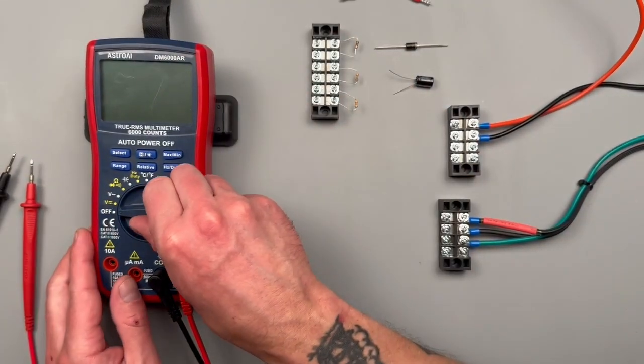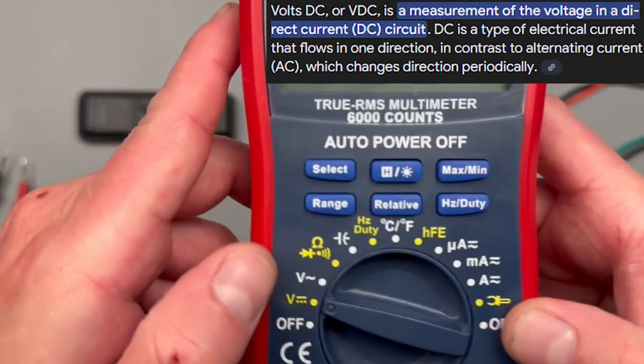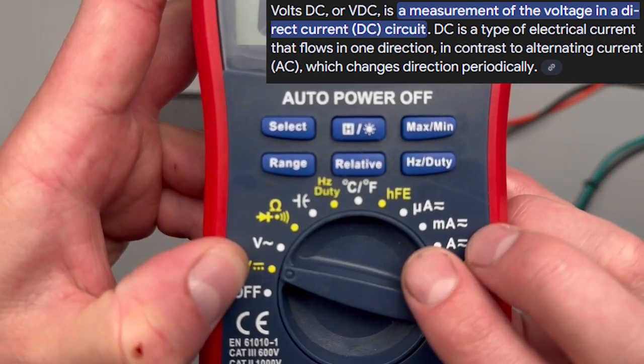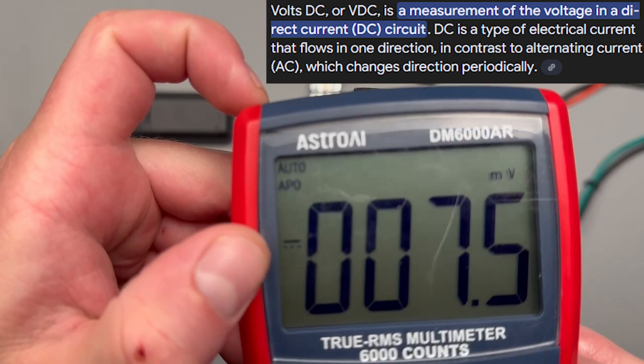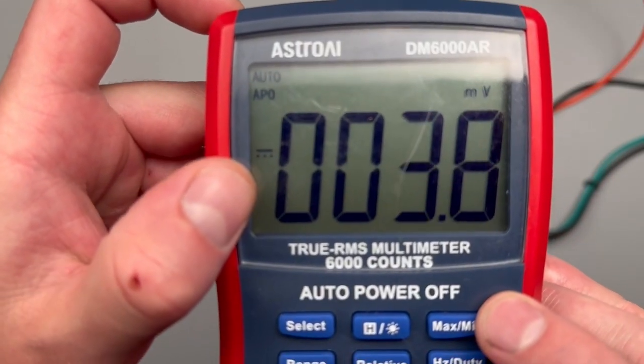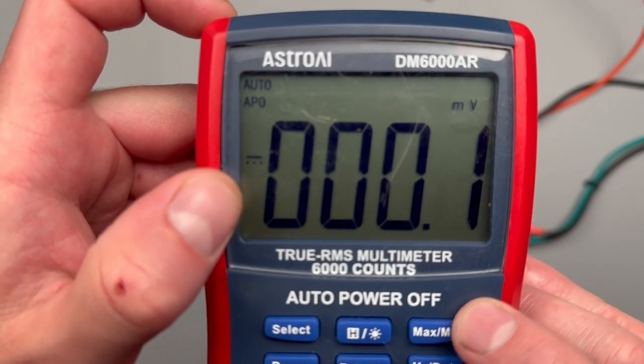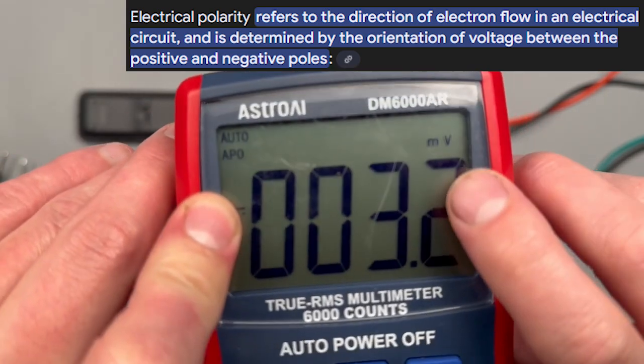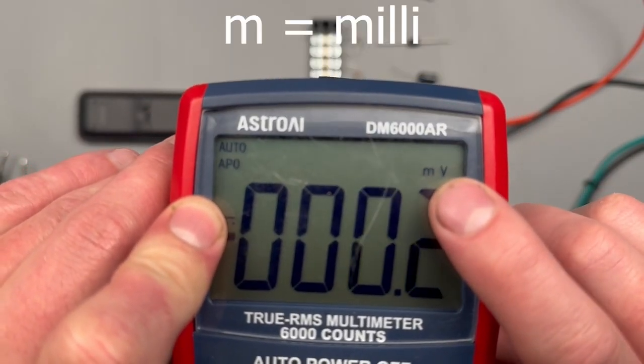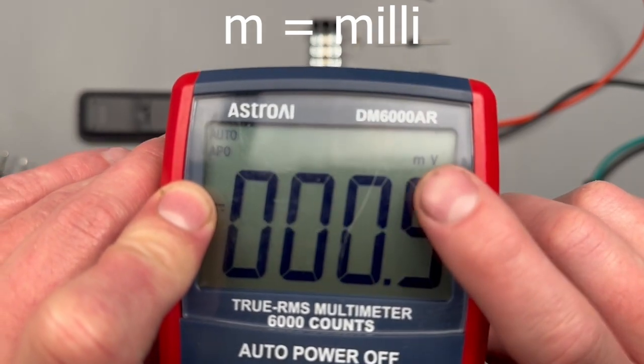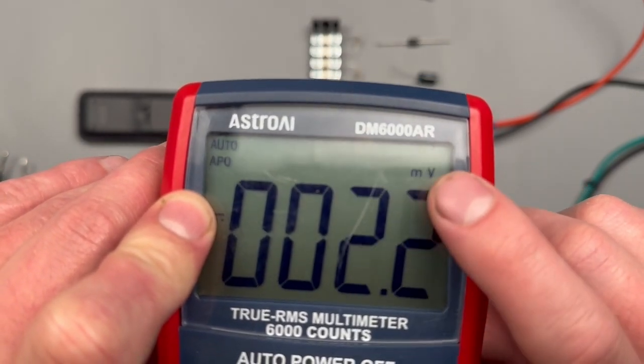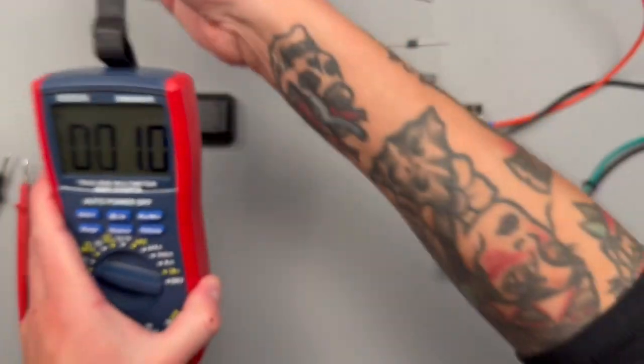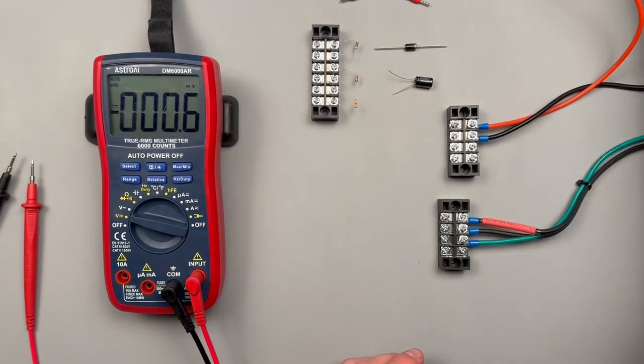First, let's start with volts DC. Couple things to know: this dotted and dashed line indicates DC, and it's also displayed up here. You're gonna see a minus sign popping up every once in a while to indicate polarity. In the upper left hand corner, auto, and if you see a lowercase m, that's gonna be for milli, and if you don't see that, it just means volts.